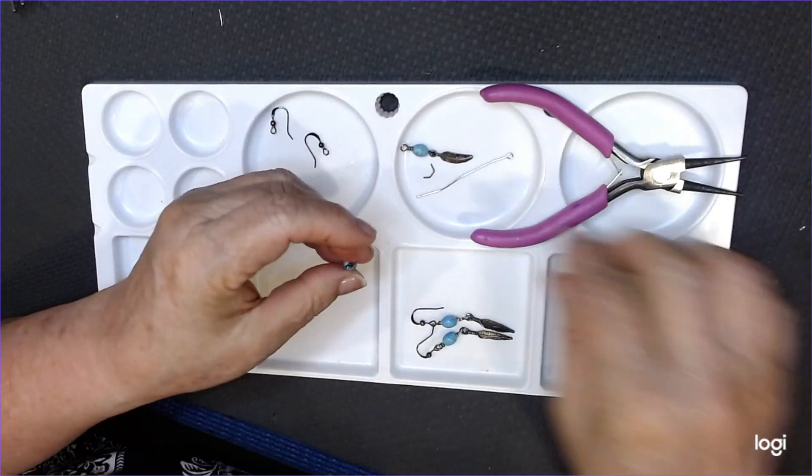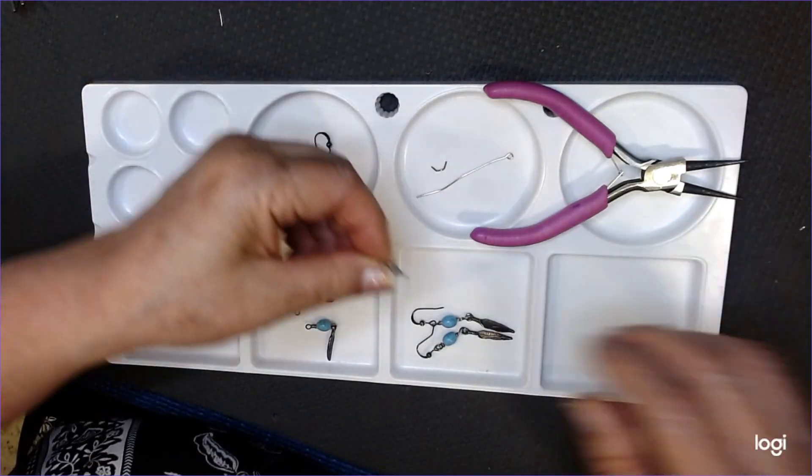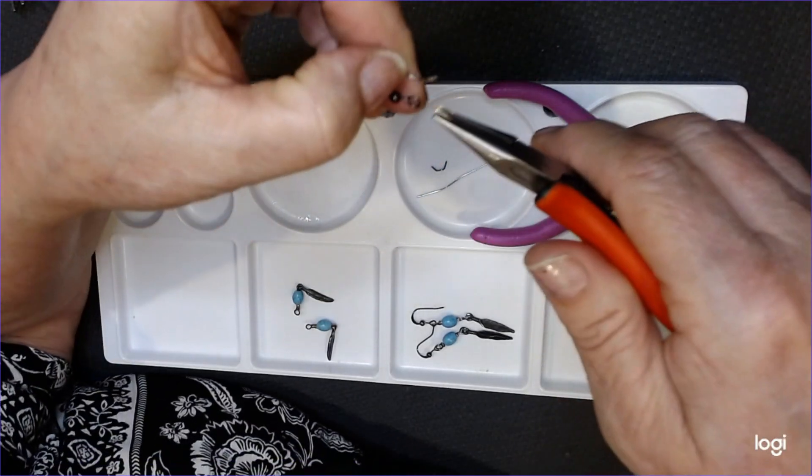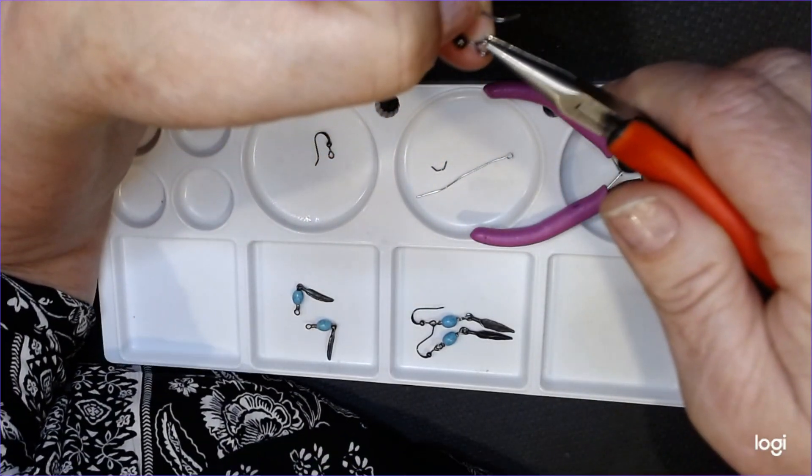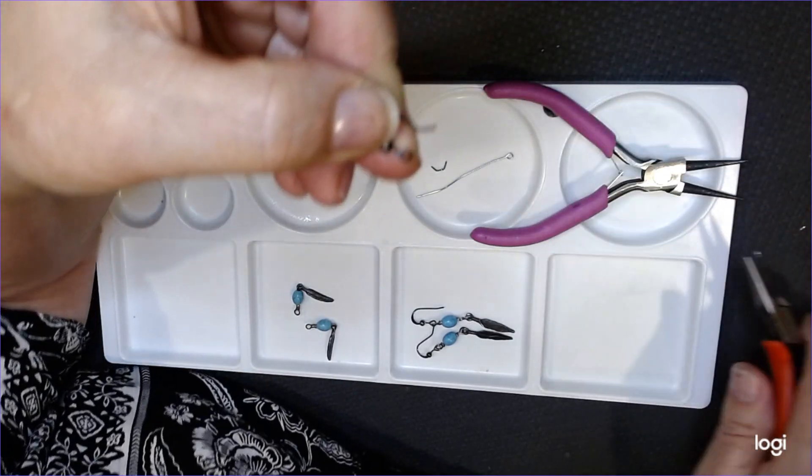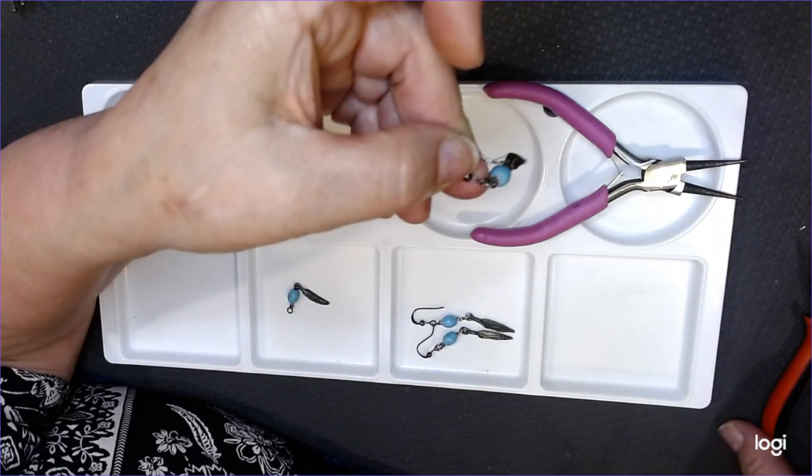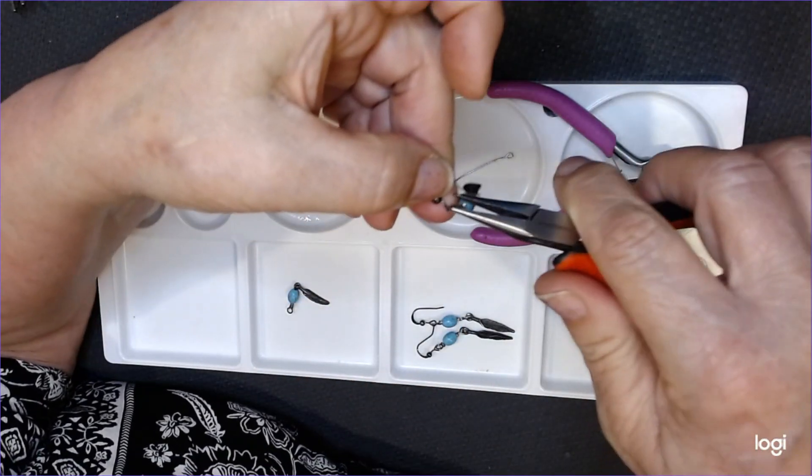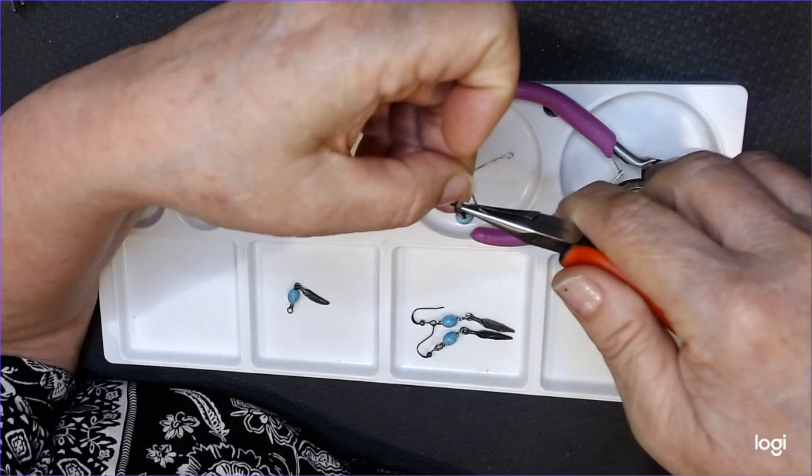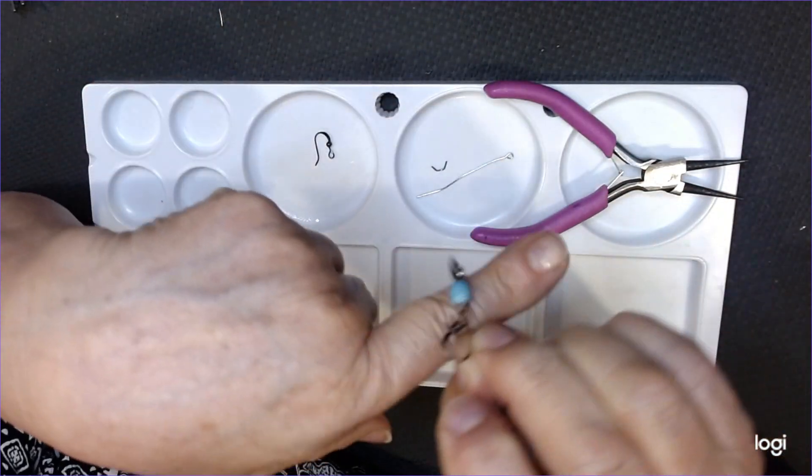Now we're ready for the wires. That quick. Now we're going to open up right here. We're going to open this up just like that. We just straight up. Stick our feather and turquoise on there. And close her up. And squash it. And there's one.